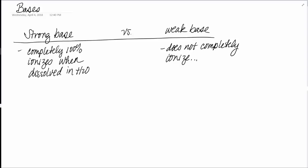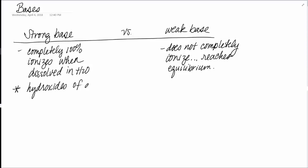Most importantly, a weak base reaches equilibrium. Pretty much the same idea. Now, just like with the strong acids, there are some strong bases you have to memorize. These are going to be the hydroxides of the alkali metals.